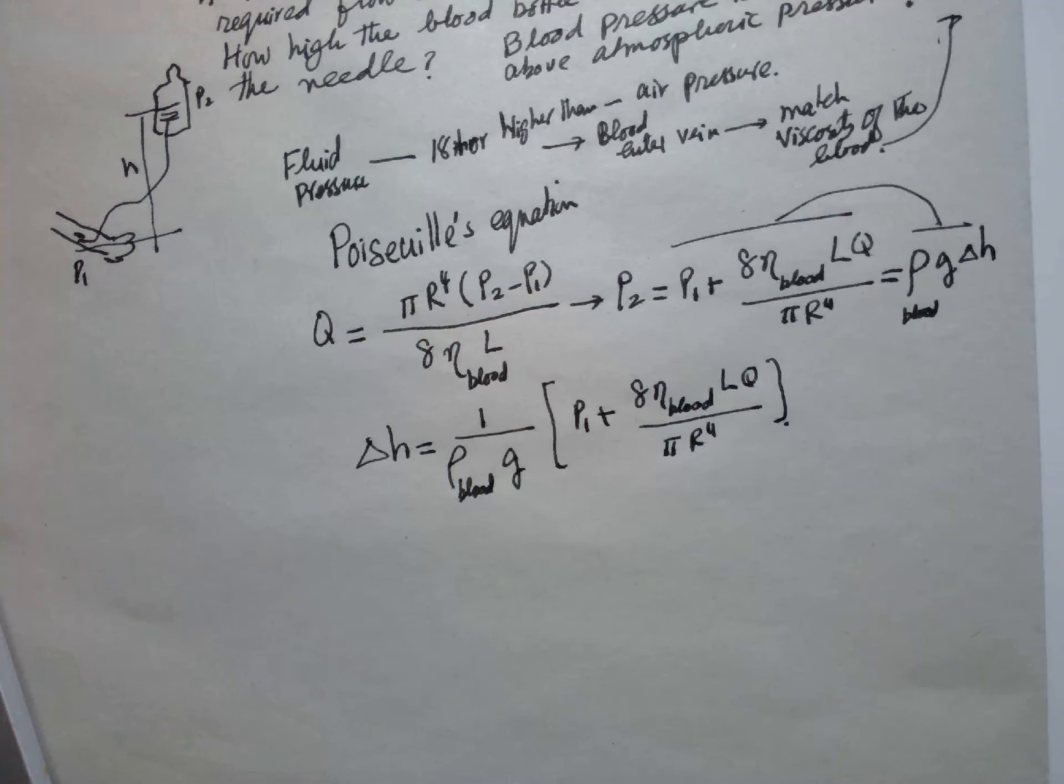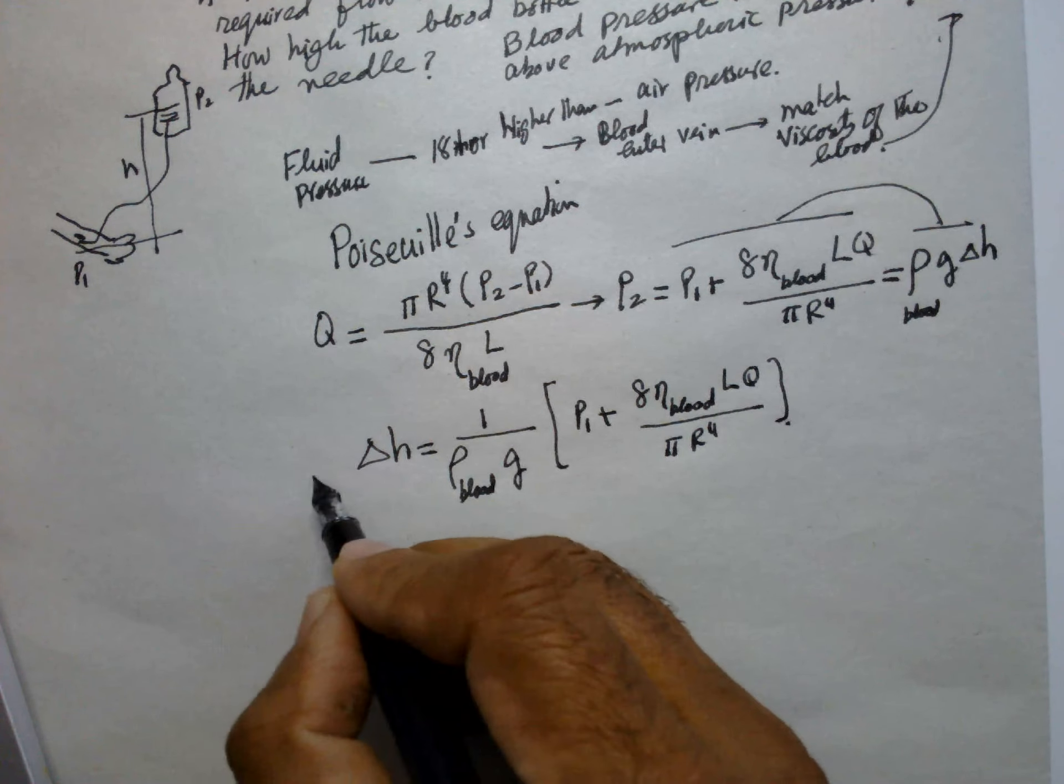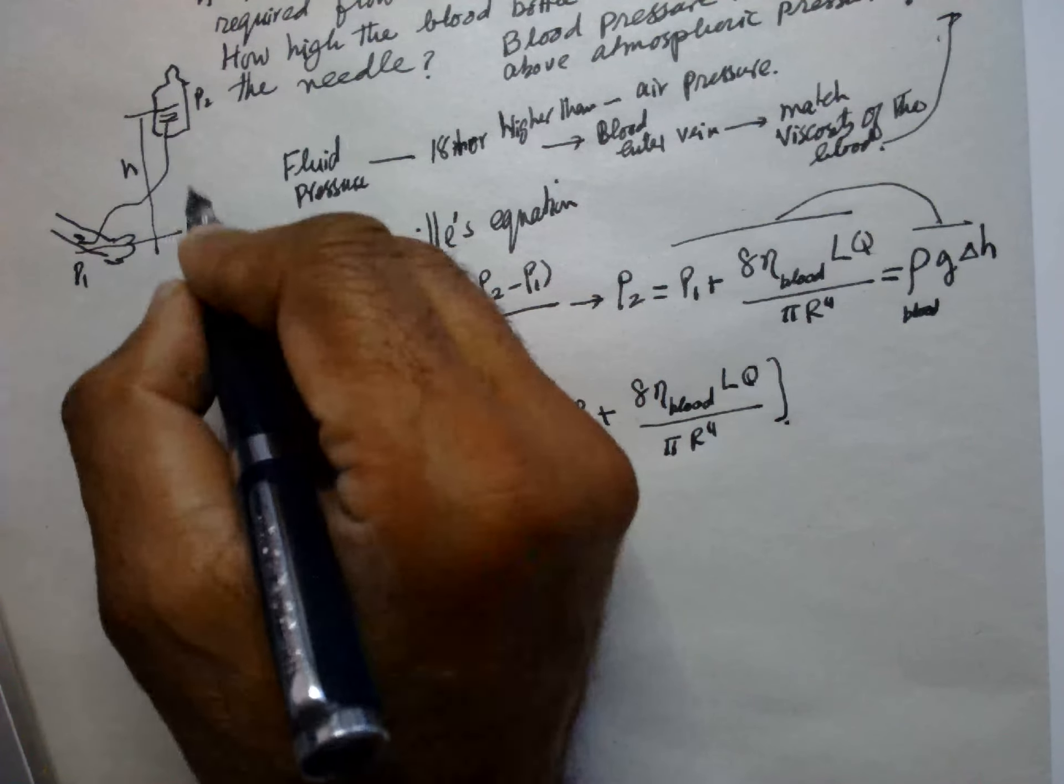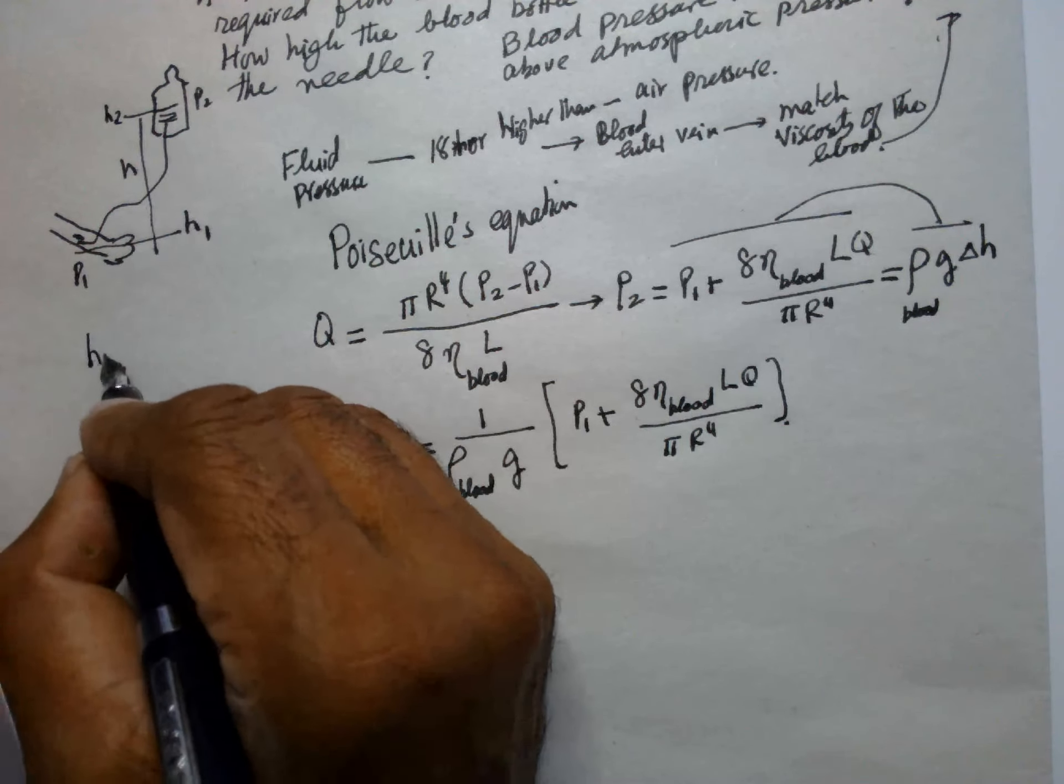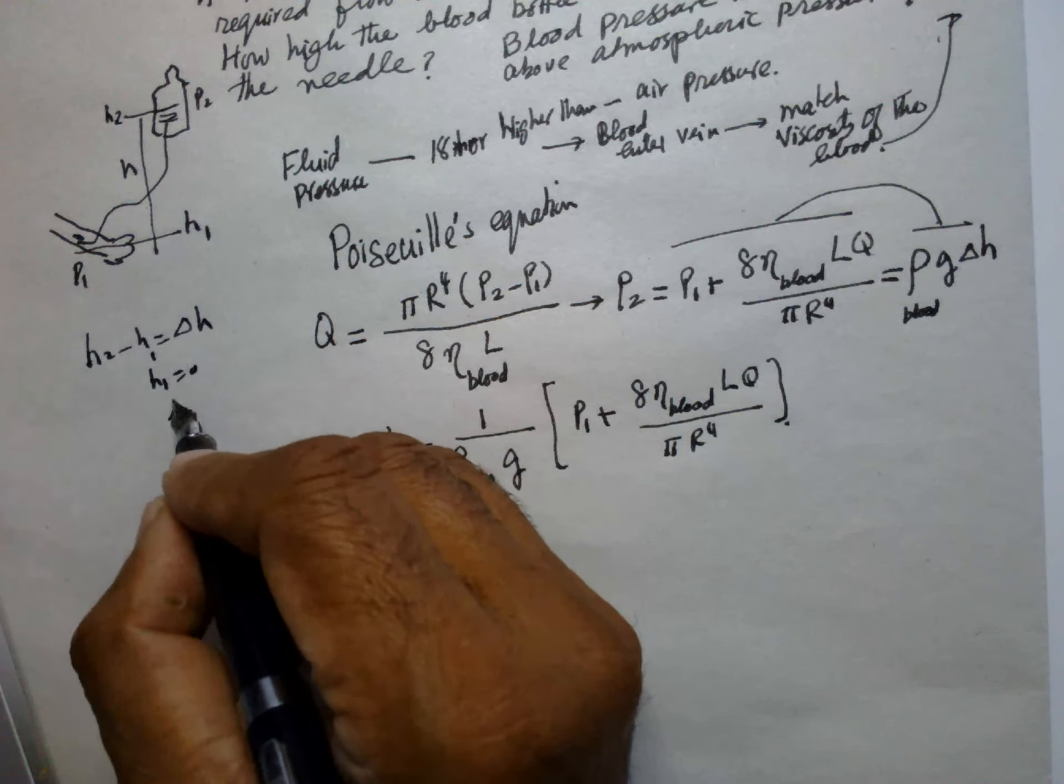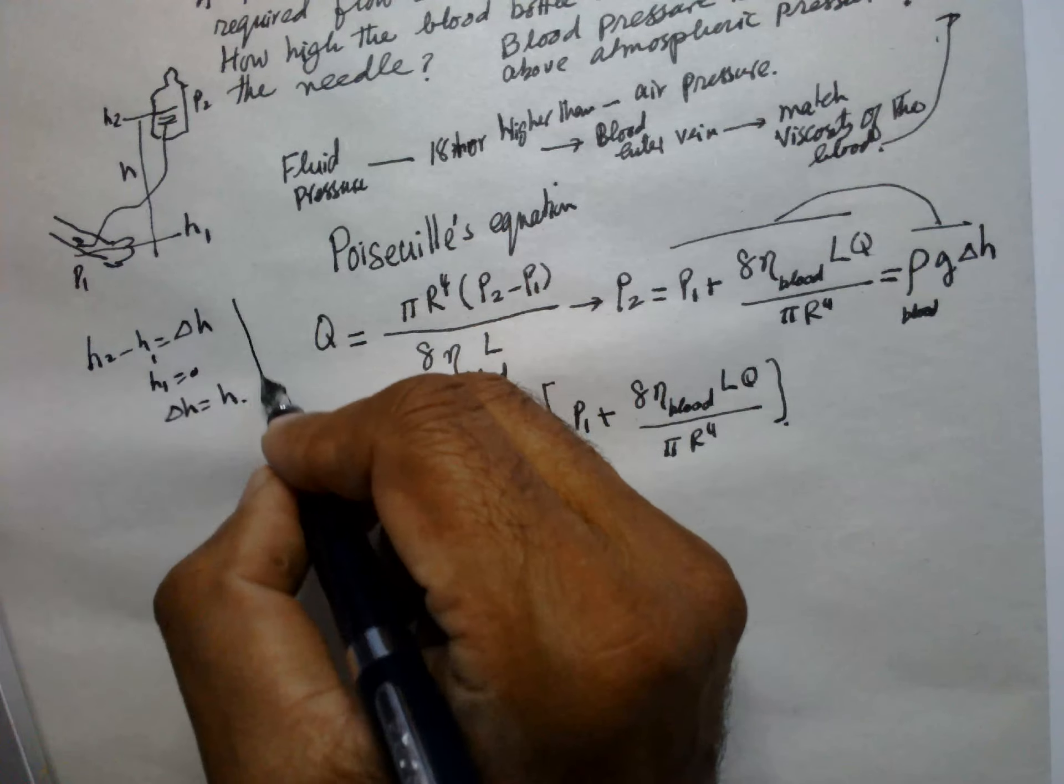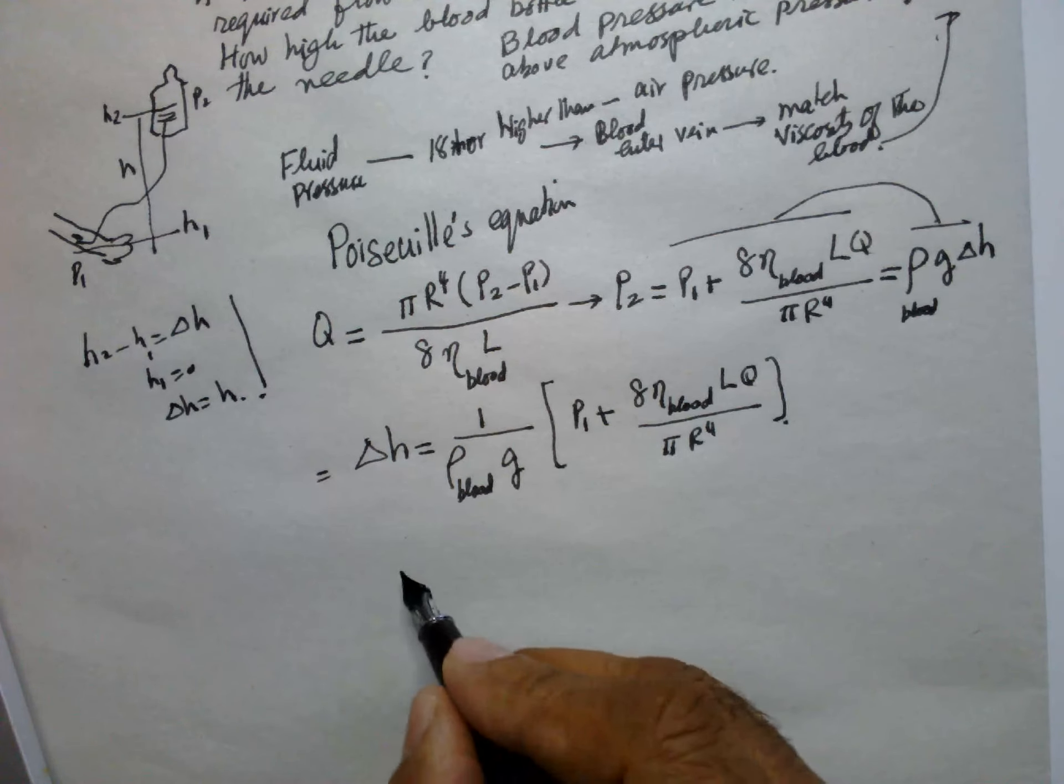This is the expression to find out the height. If Δh is h₂ minus h₁, and if h₁ is equal to 0, then Δh is equal to h.